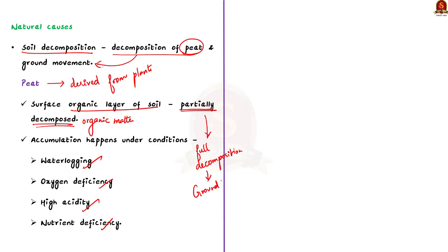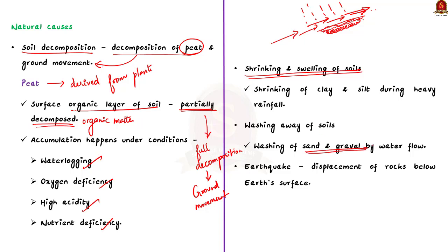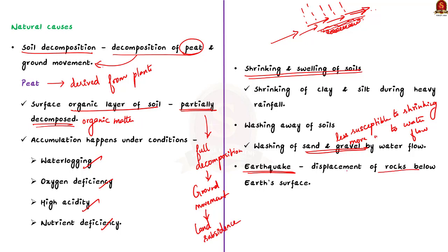Secondly, land subsidence is caused due to shrinking and swelling of soils. Soils such as clay and silt are likely to cause land subsidence because they shrink and swell depending on their moisture content. If there is more moisture due to heavy rainfall, clay and silt would shrink causing land subsidence. Thirdly, land subsidence is caused due to washing away of soils. Soils like sand and gravel are susceptible to being washed away by water flow, which also causes land subsidence. Fourthly, land subsidence may be caused due to earthquake, which causes sudden displacement of the crust of earth leading to land subsidence.